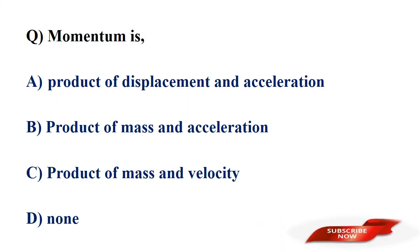Momentum is? Options: product of displacement and acceleration, product of mass and acceleration, product of mass and velocity, none of those. Answer: option C, product of mass and velocity. Momentum is equal to mass multiplied by velocity.